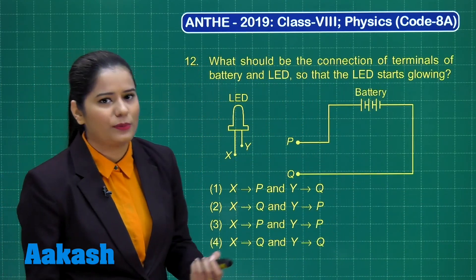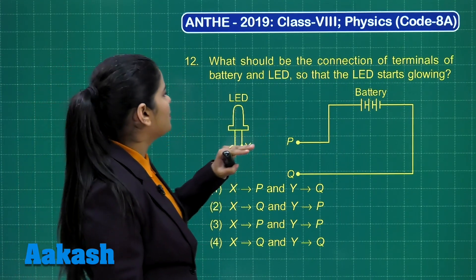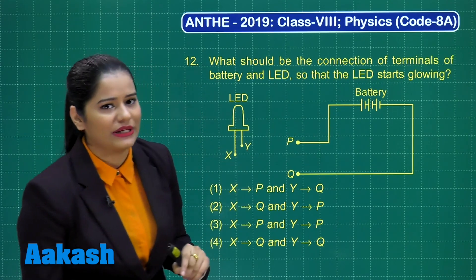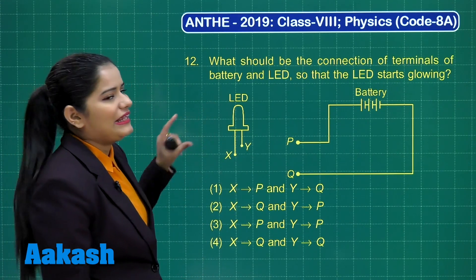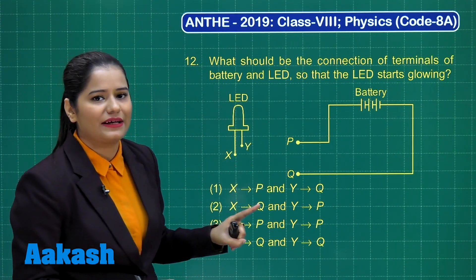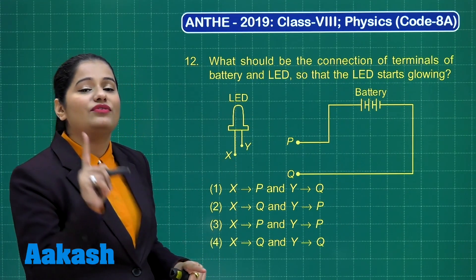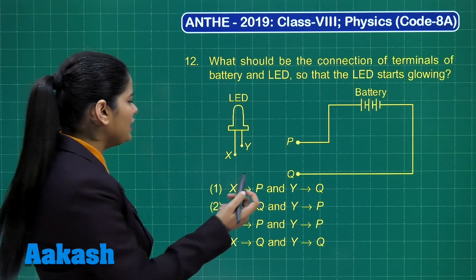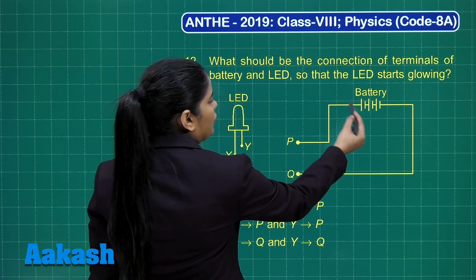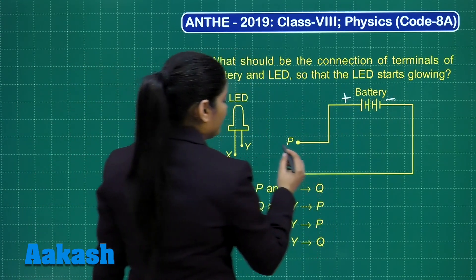Question number 12 asks what should be the connection of terminals of battery and LED so that the LED starts glowing. If you look at an LED, it has one longer leg and one shorter leg. The longer leg of the LED is always connected to the positive terminal. So X should be connected to P, because P is connected to the positive terminal of the battery.